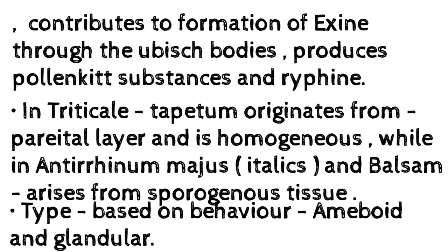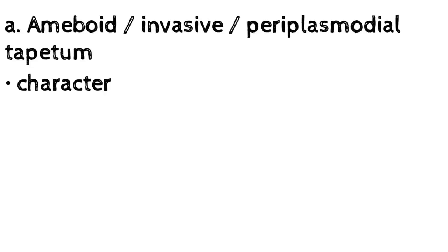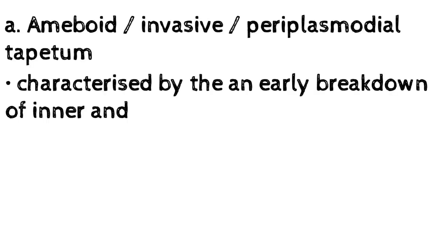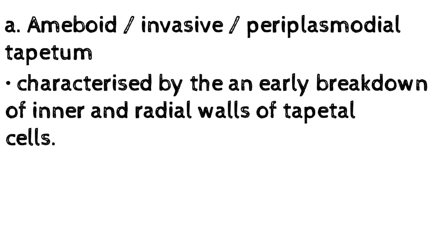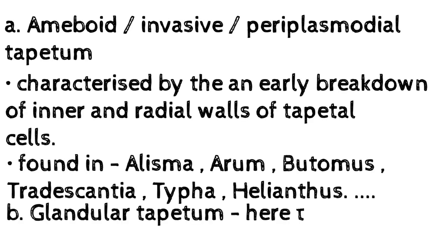Types of tapetum based on behavior: A. Amoeboid (invasive/periplasmodial) tapetum — characterized by the early breakdown of inner and radial walls of tapetal cells. Found in Elisma, Arum, Butomus, Tradescantia, Typha, and Helianthus.